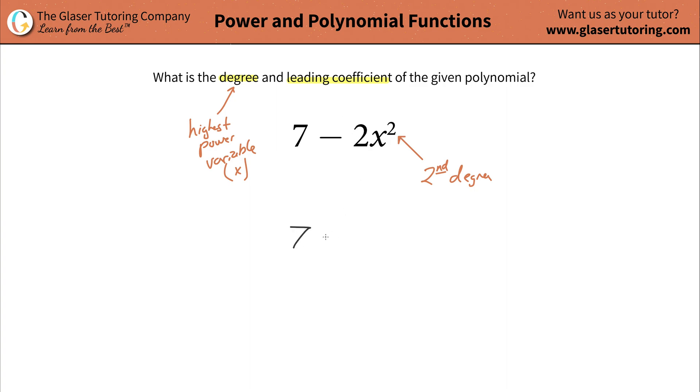Wouldn't this be the same as 7 plus, I'll put this in parentheses now, a negative 2x squared? And therefore, the leading coefficient here is going to be the negative 2.